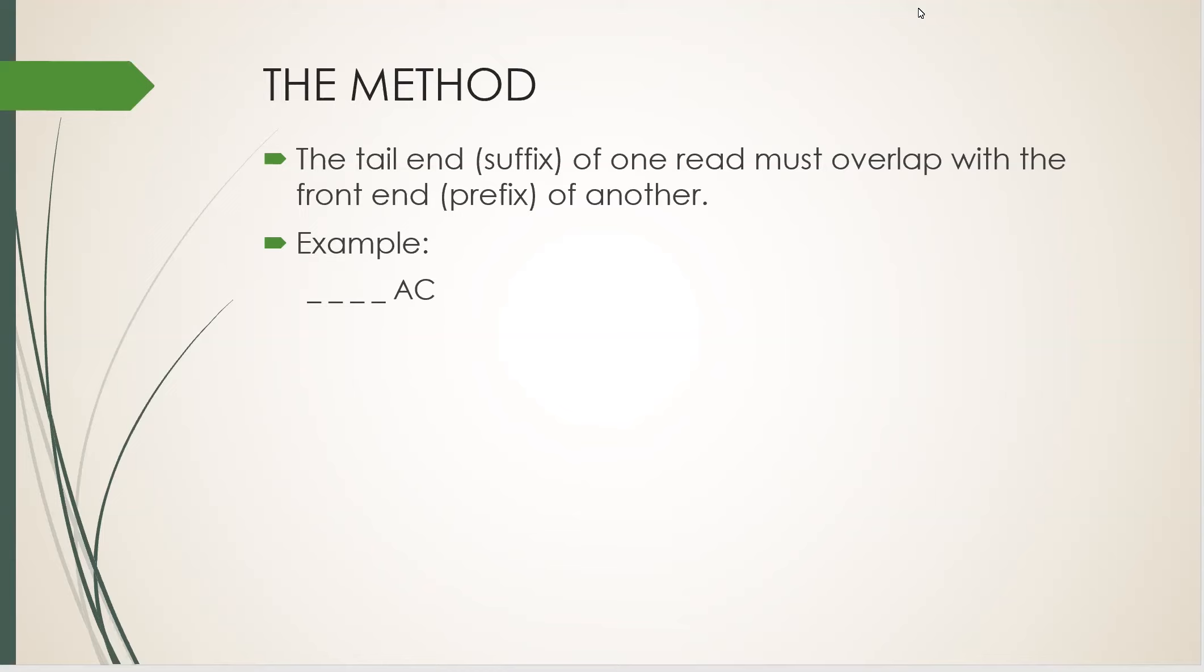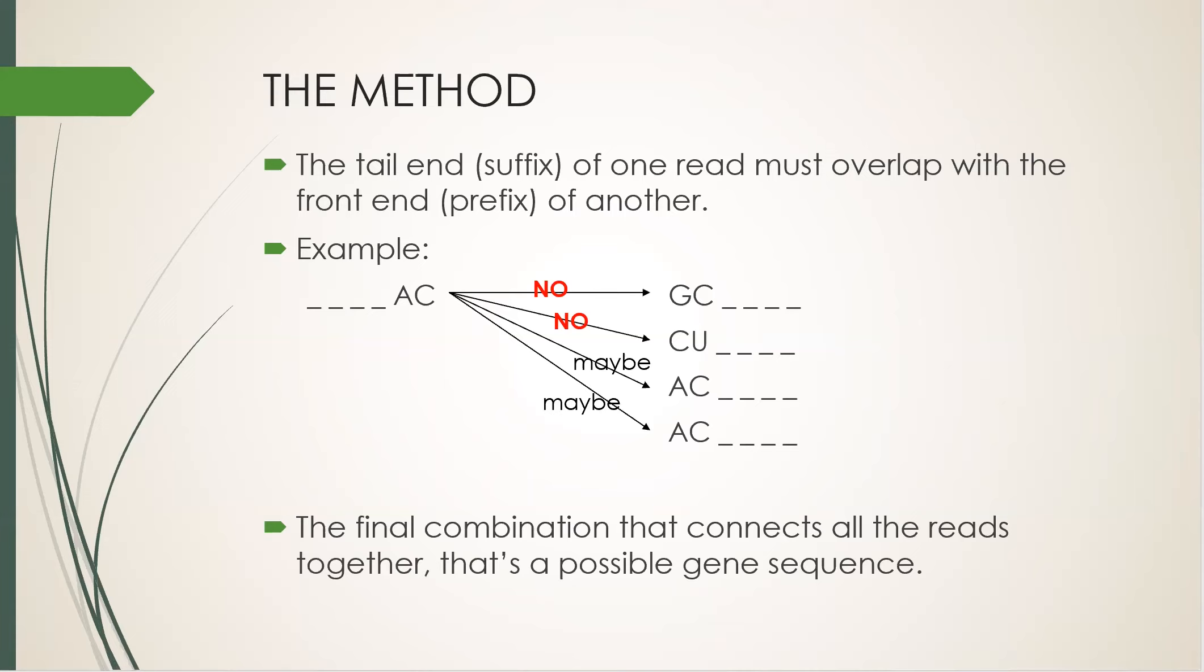It goes something like this. We have a read that ends with AC. We have other reads that start with GC, CU, AC, and another AC. Then the first two cannot be the neighbors to the right. Only the last two can possibly maybe be neighbors to the right. Well, how do we know which of the last two? We don't know. We put them both down as possibilities for now and we keep going and finish all the tens or hundreds of millions of reads. Some of the possibilities will go nowhere. Some will get us to a combination that connects all 100 million reads together. That's a possible gene sequence.